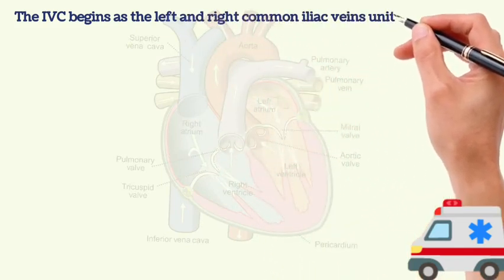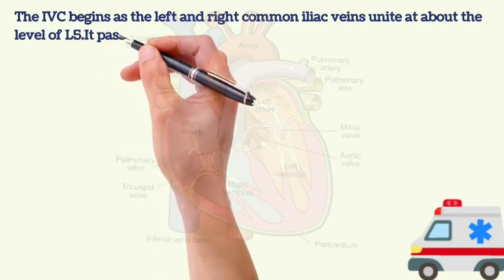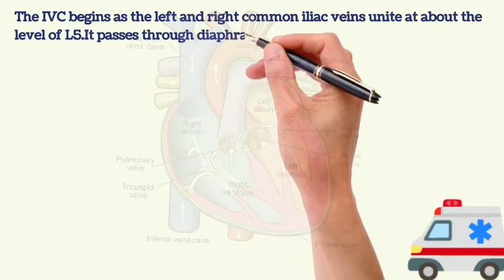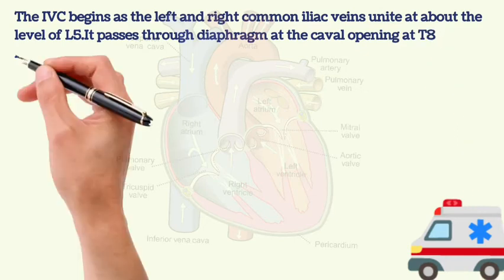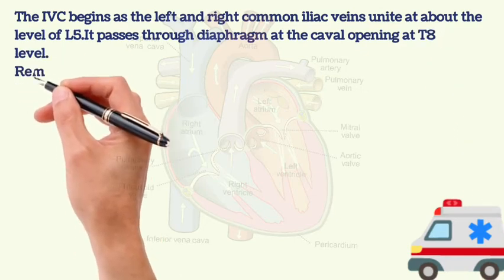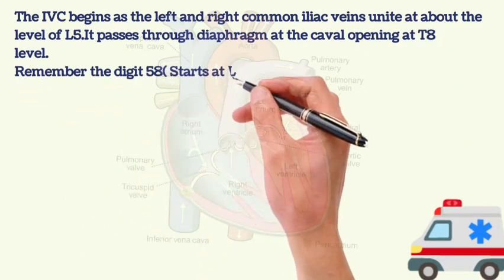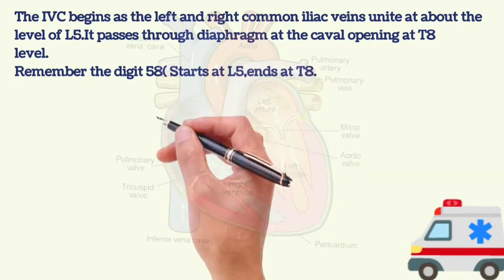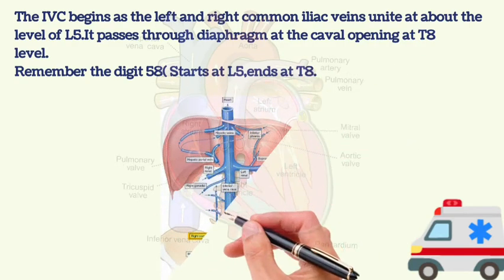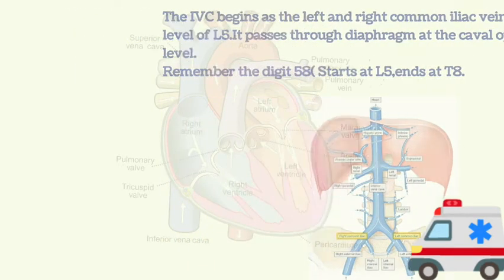The inferior vena cava begins as the left and right common iliac veins unite at about the level of L5. It passes through the diaphragm at the caval opening at the T8 level. Remember the digits 5 and 8: the inferior vena cava starts at L5 and ends at T8.